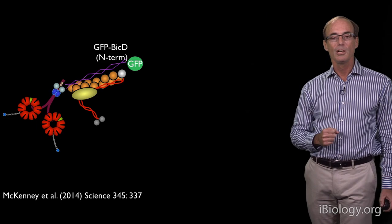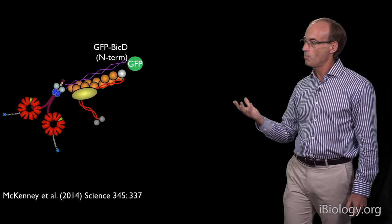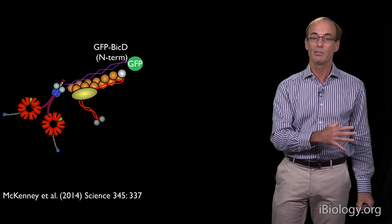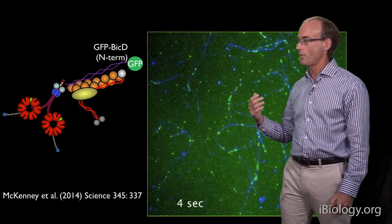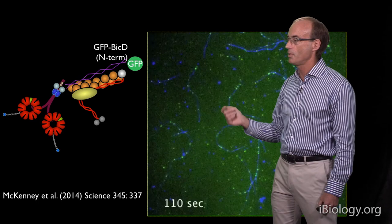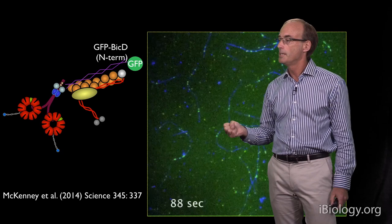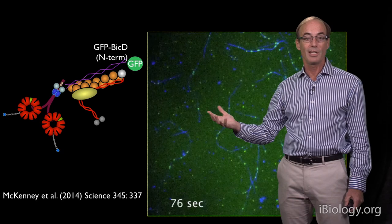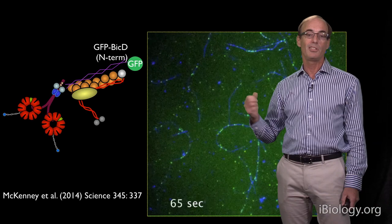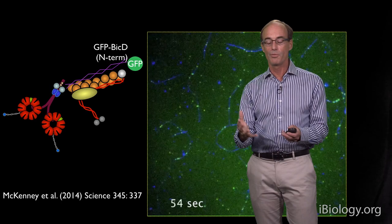Going back to 2013, we were interested whether this complex would convert dynein from that non-processive motor to a processive motor. Rick McKinney purified this complex. He also tagged the BicD with a GFP, and in this case we just used the N-terminus of BicD, which was sufficient to combine all these proteins together. To our great satisfaction, there was tremendously good processive movement of this entire complex. All these individual green dots are the BicD, which are traveling along the microtubules due to the interaction with dynein and dynactin. In fact, this is one of the most processive motors that we've studied — about 5 to 10 times more processive than the kinesin motor.